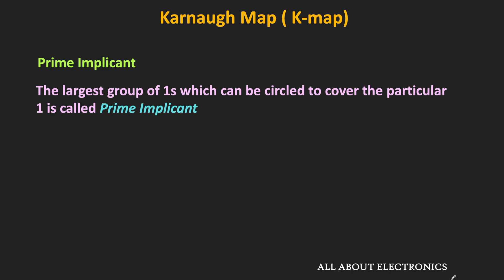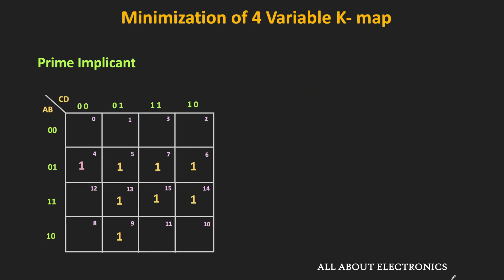Now let us learn what is the prime implicant. The largest group of ones which can be circled to cover a particular one in the K-map is called the prime implicant. For example, if we consider minterm m4, then to cover it, the largest group of ones we can circle is the group of these 4 ones — so this is one of the prime implicants of the given function. If we see the group of these 2 ones, it is already covered by the group of 4 ones. That means this group in the yellow color is an implicant, but it is not the prime implicant. In the case of prime implicant, it is not fully covered by any other group.